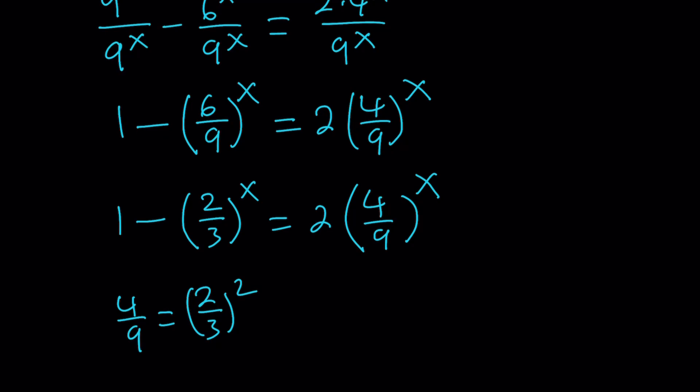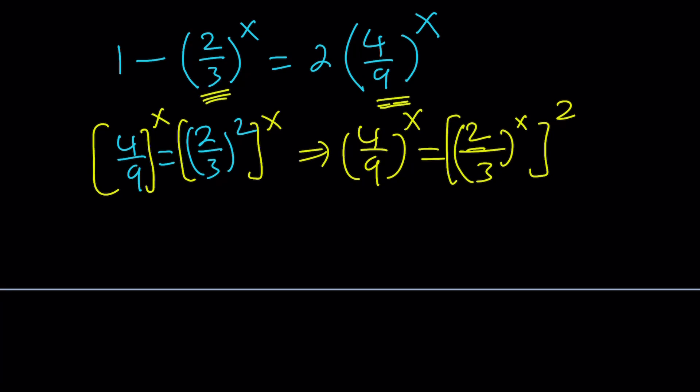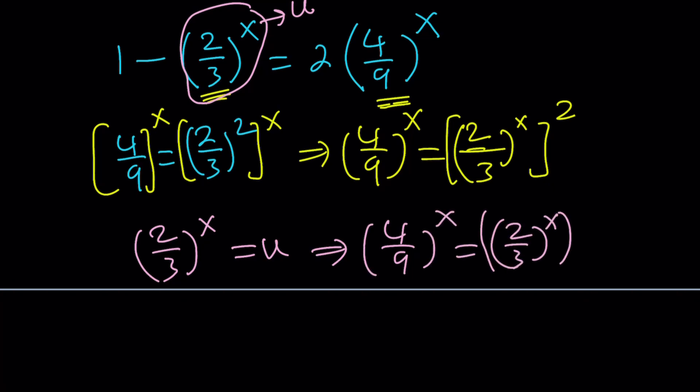If we raise both sides to the power x, we're going to have something nice. Raise both sides to the power x from this identity, and you get (4/9)^x = (2/3)^(2x), which can be written as ((2/3)^x)^2. What does that tell you? This expression right here is this expression squared. It means use substitution.